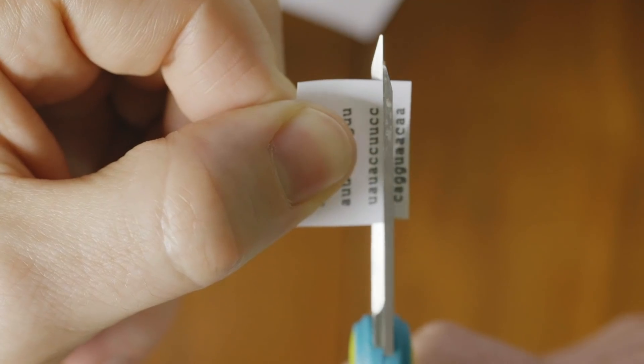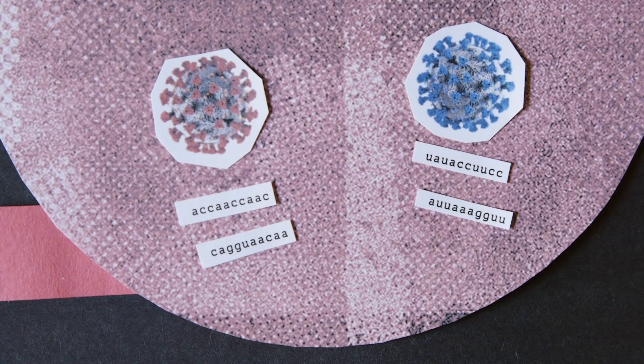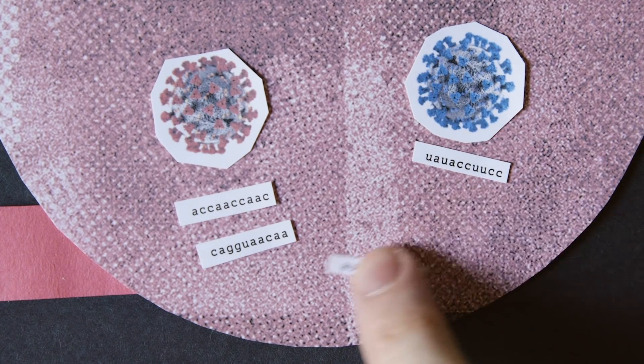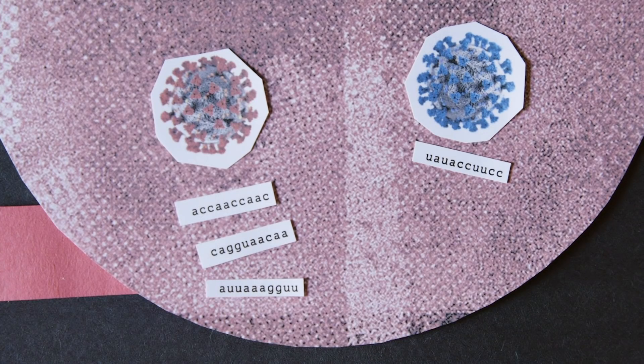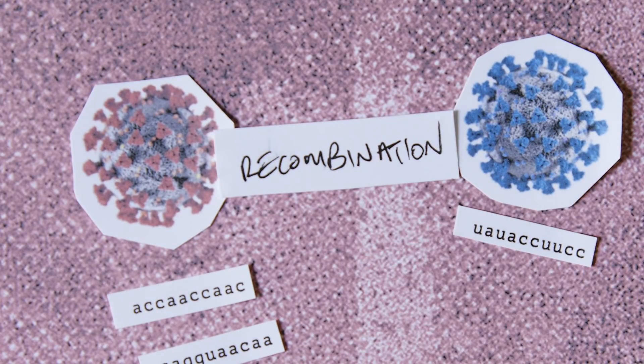Other times, multiple different viruses can also end up in the same host body. If they both dump their genes into the same cell, some bits and pieces can get swapped around. And an entirely new virus is created. That process is called recombination.